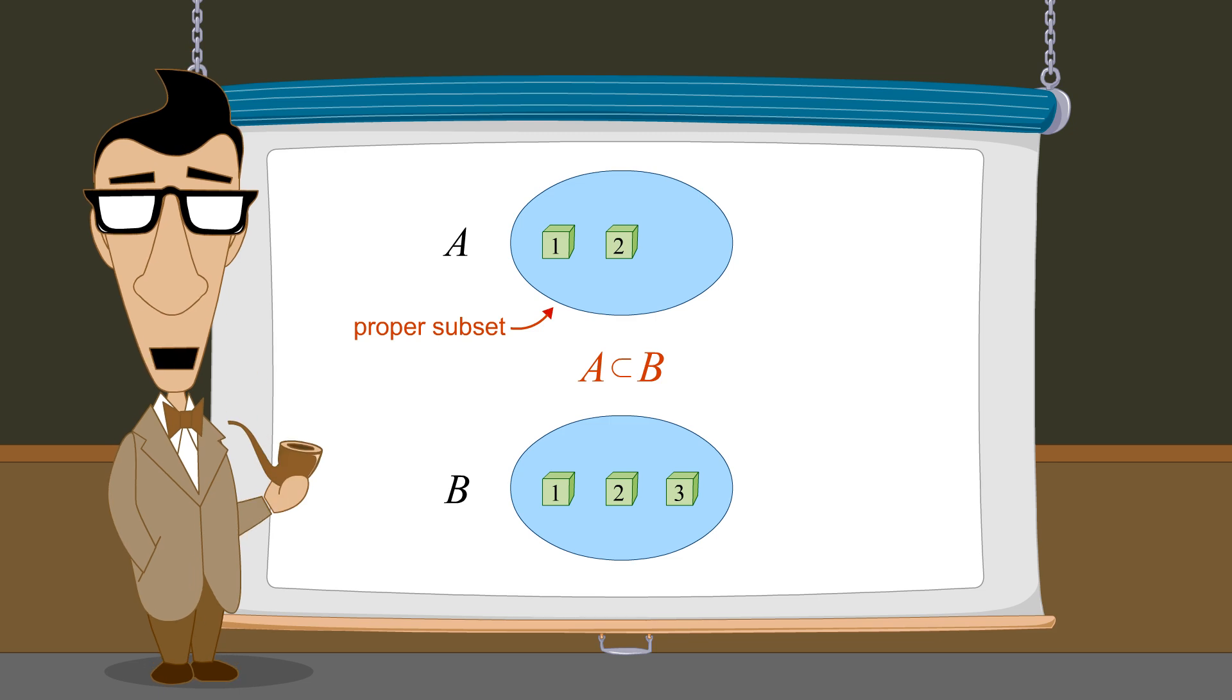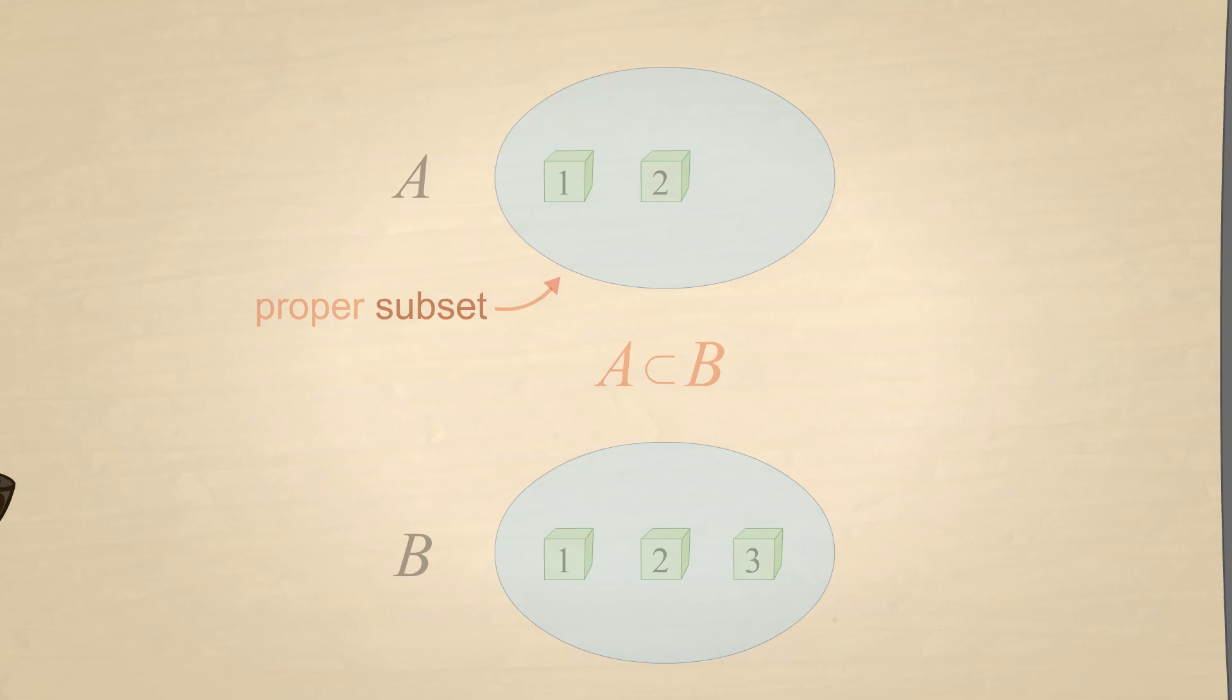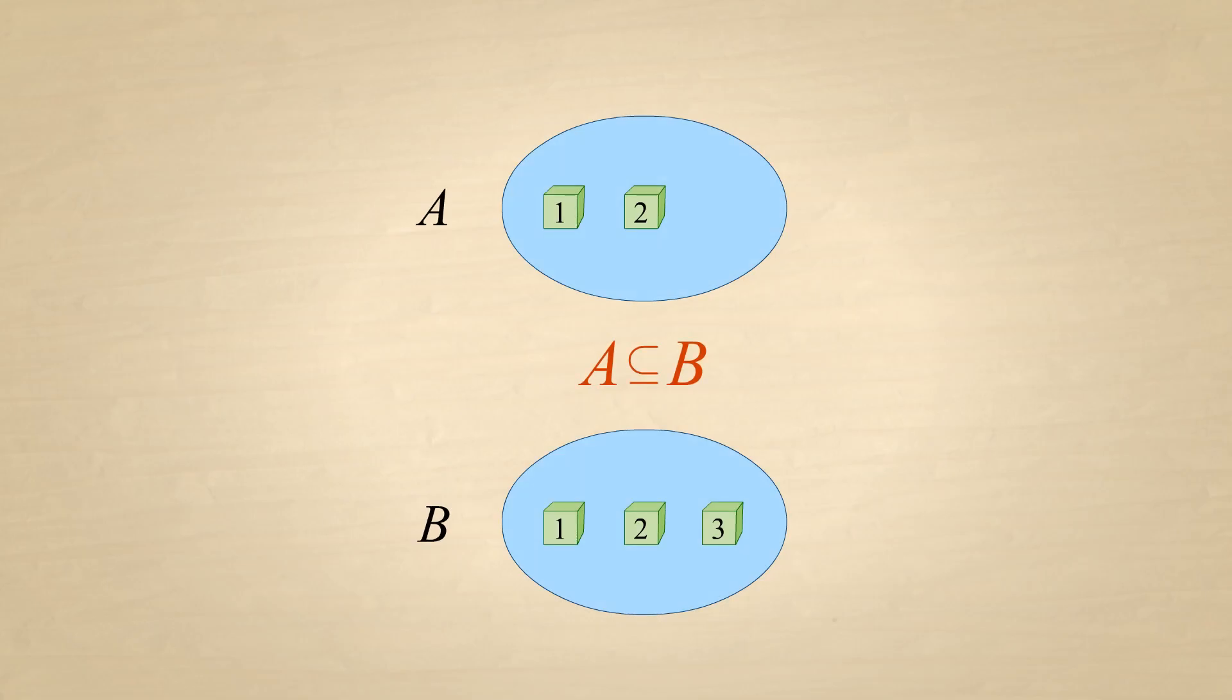In addition to the relation of subset, a set can also be a superset. In any case where set A is a subset of set B, we can also say that set B is a superset of set A. This relation is denoted using the superset symbol, which is the subset symbol reversed. Likewise, if A is a proper subset of B, then B is a proper superset of A.